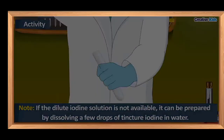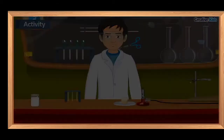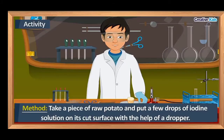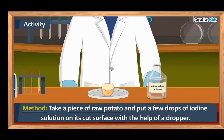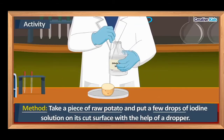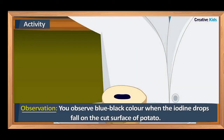Now let's start the activity. Take a raw potato and iodine solution and a dropper. Cut the raw potato into two pieces and let a few drops of iodine solution fall on the cut surface of the potato.